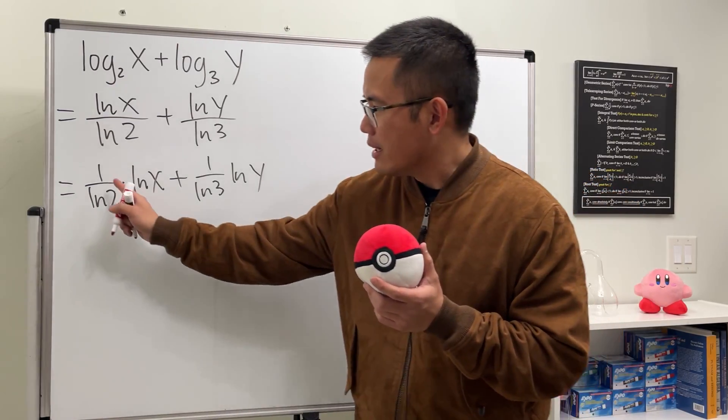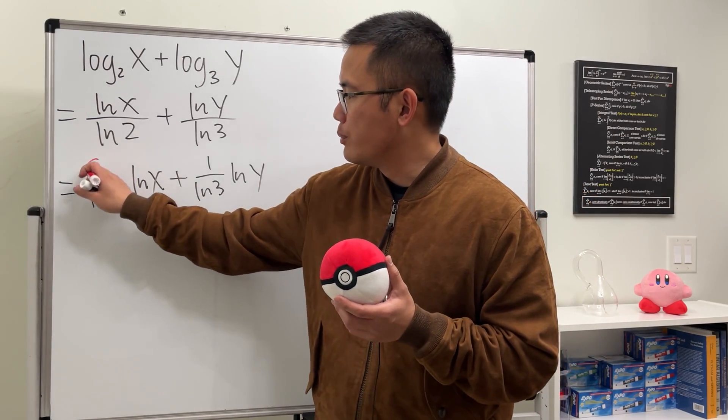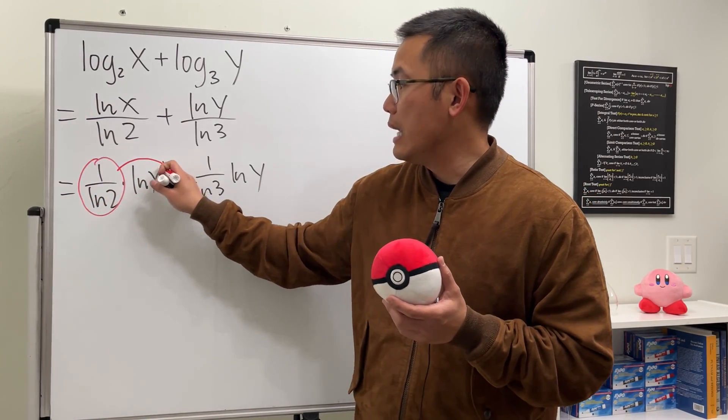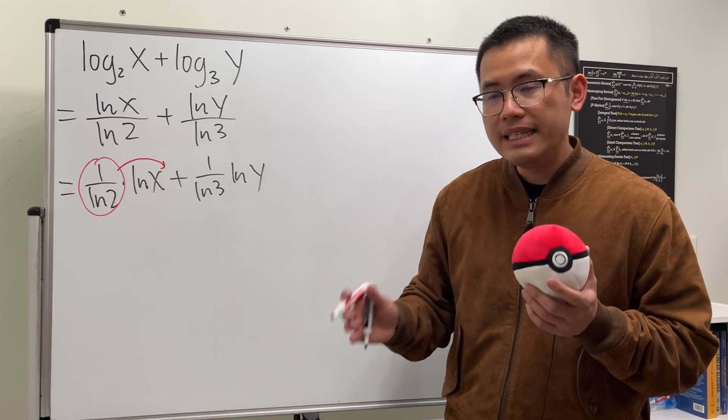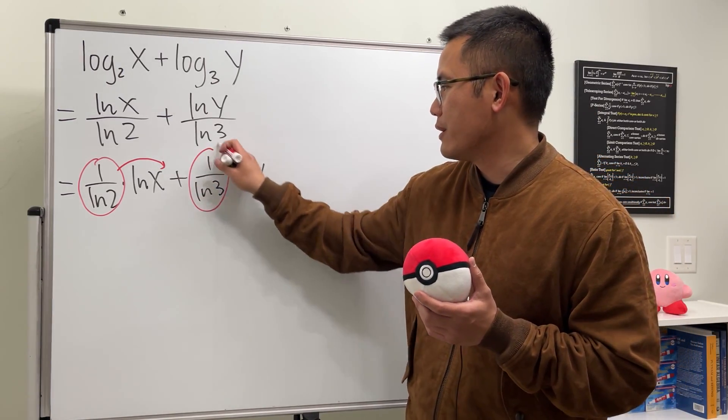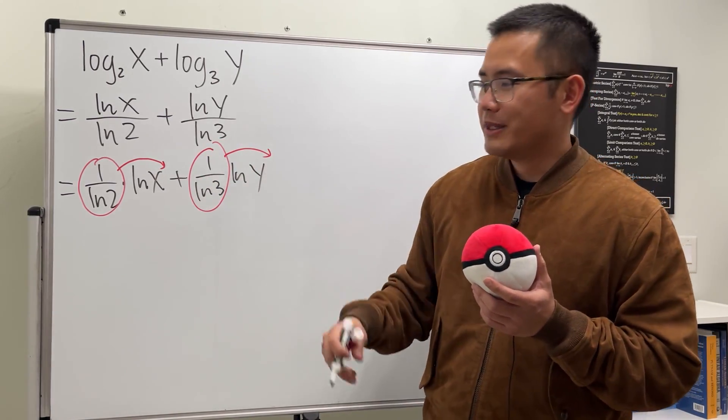Yeah, right, because 1 over ln 2 is just a number, so we can actually put this to here and make that into an exponent. And of course, we can do the same thing right here.